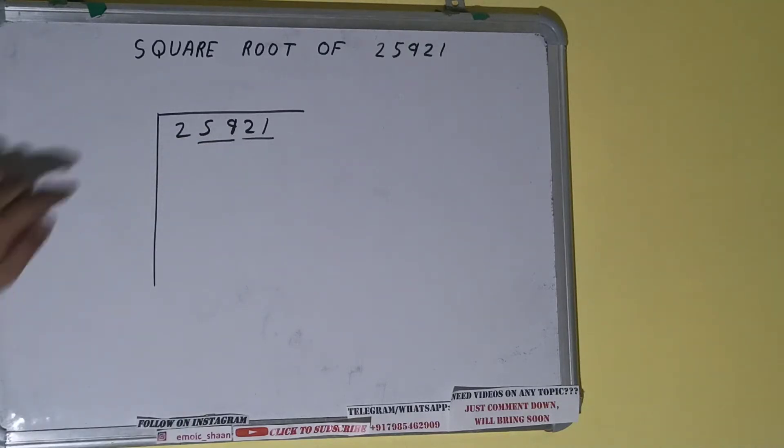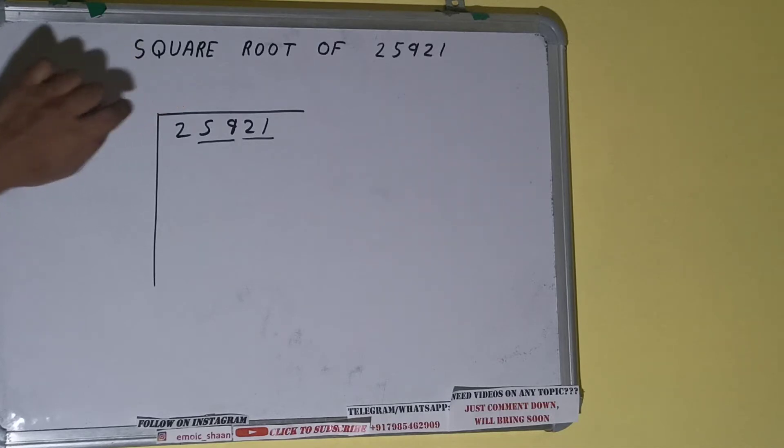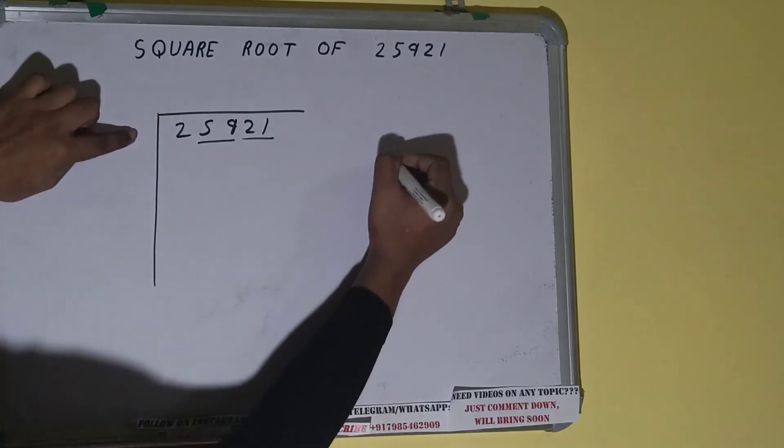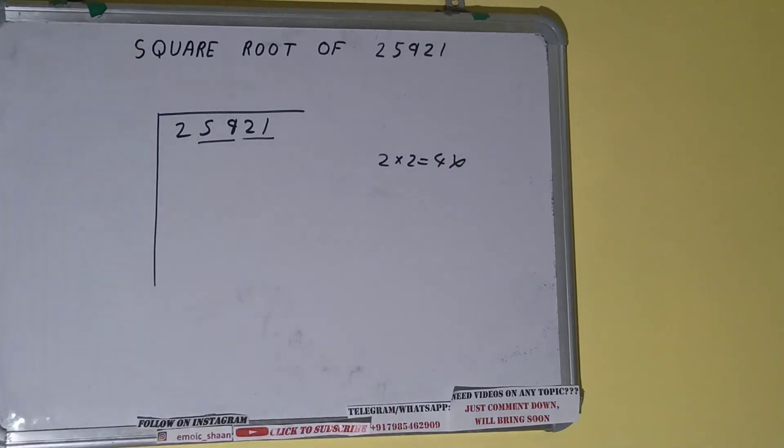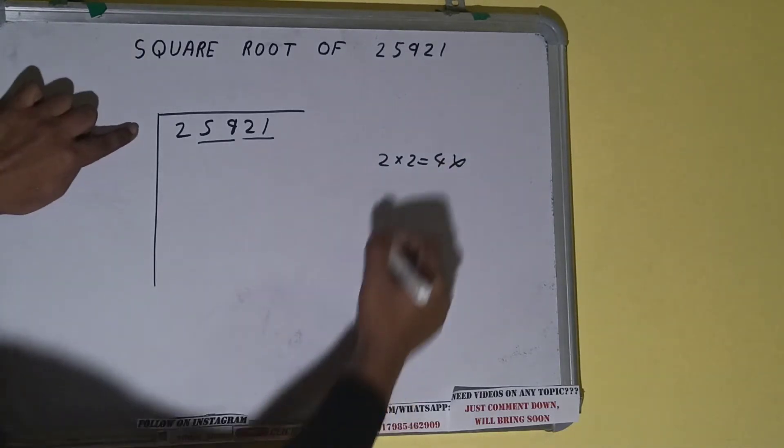The rule is whatever number we write here, we have to write here also. So if we write two here and two here, we'll be getting four which is greater than two, so we cannot use it. If we write one here and one here...